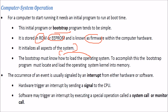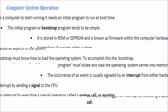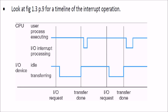Everything in the OS depends on interrupts. Any event is signaled by an interrupt — it may be hardware or software. Hardware triggers an interrupt by sending a signal to the CPU, and the CPU responds accordingly. Software can also trigger an interrupt through special operations called system calls or monitor calls. This is the timeline of interrupt operation.